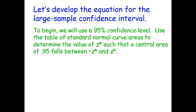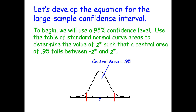Let's develop the equation for the large sample confidence interval. We will use a 95% confidence interval. We're going to use the table of standard normal curve areas to determine the value of z-star, such that a central area of 0.95 falls between negative z-star and positive z-star. This represents our central area, and there is a lower and an upper tail, each having a value of 0.025. Our negative z-star is negative 1.96 and our positive z-star is 1.96.